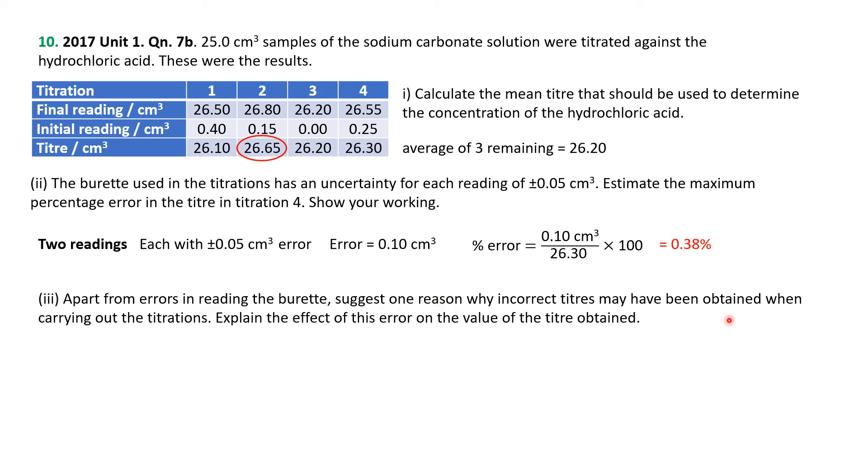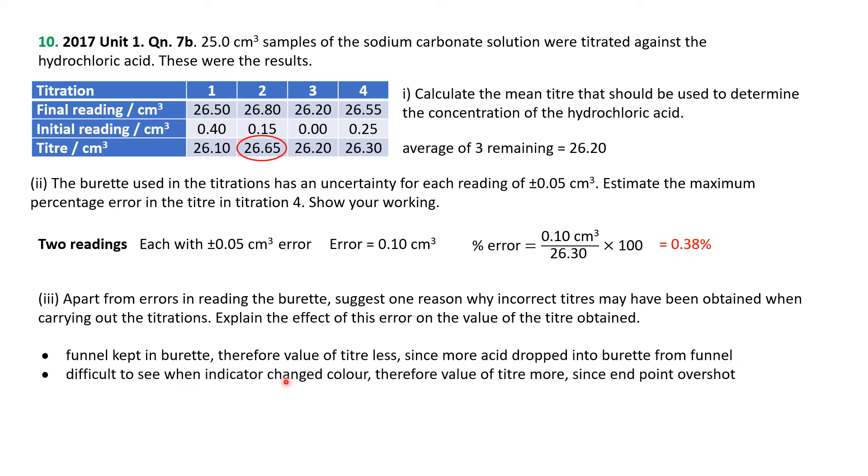Other than errors reading burette suggest one reason why incorrect titers may have been obtained when carried out the titrations. Explain the effect of this error on the value of the titer obtained. First of all, if you kept the funnel in the burette, therefore the volume that you're measuring is going to be less, because more acid dropped into the burette from the funnel. Difficult to see when the indicator changed color, so you overshot the end point, so you added in too much. Probably why this one was messed up. Jet not filled or air bubble in the burette, therefore the value of the titer more since the acid was used to fill the jet or the bubble. In other words, there was acid used to fill something in the burette, not to react with the carbonate.